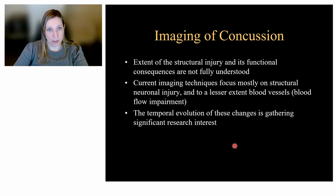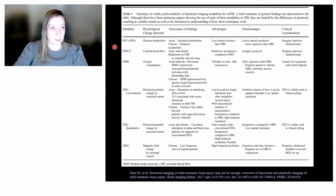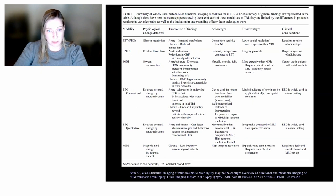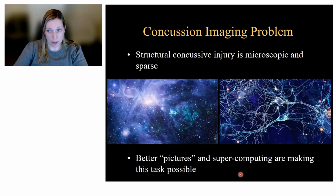In imaging of concussion, the extent of structural injury and its functional consequences are not fully understood. Current imaging techniques focus mostly on macrostructural injuries and to a lesser extent on blood vessels and blood flow, and we don't have a good understanding of how these findings change over time relative to the clinical course. This presents a big challenge in detecting concussion with imaging. Many modalities have been studied, including PET, SPECT, functional MRI, EEG, and magnetoencephalography. The core problem is that more severe injury is easy to see on MRI, but concussion is very difficult to detect — structural concussive injury is microscopic and sparse.